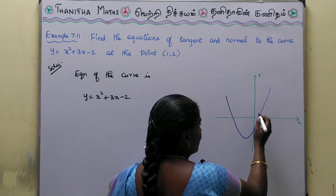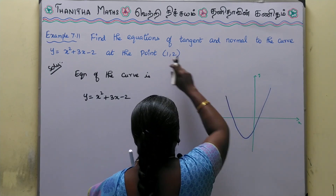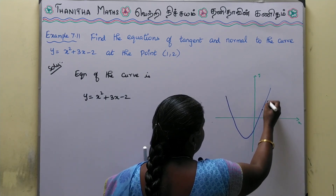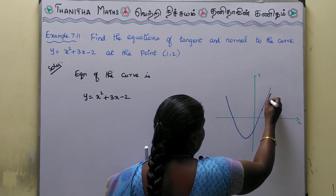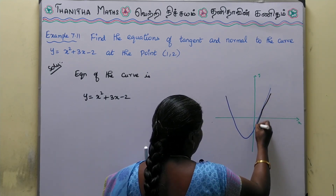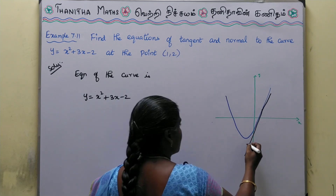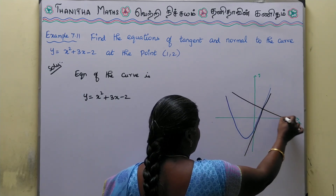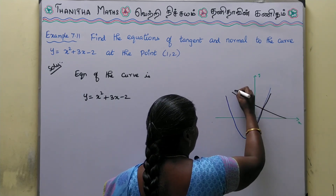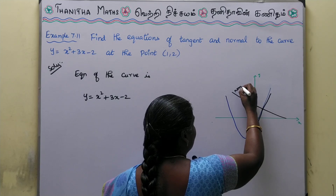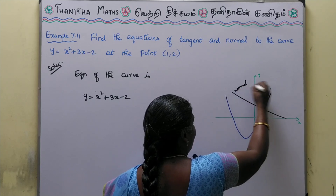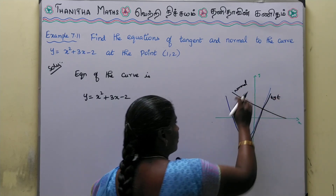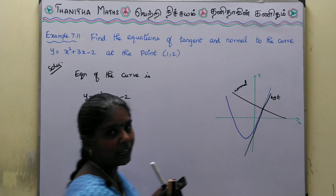Point (1, 2) is on the curve. At point (1, 2), the tangent is drawn. The normal is the perpendicular line to the tangent at that point. So this is the tangent and this is the normal.